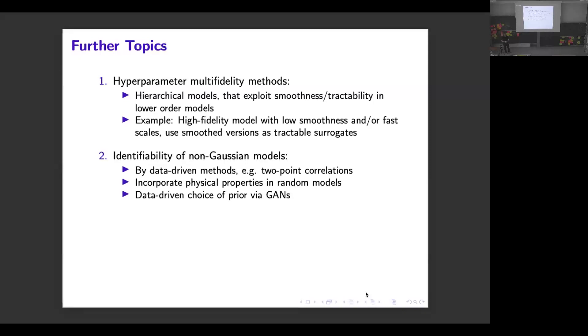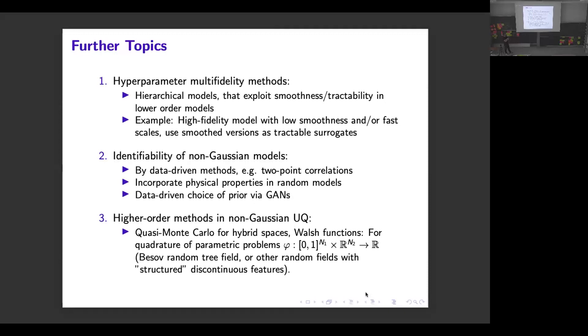Last point was: is there actually a way to use higher-order methods in non-Gaussian UQ? This also relates to my presentation earlier this week where I basically said whenever we have a random field with discontinuous features, I can rewrite it as a parametric mapping with respect to some product space. But in the first factor here, the regularity of this mapping is quite low and higher-order methods wouldn't really work. But it turned out, Peter suggested, that if the structure of the discontinuity is somehow easy or well-behaved, there's actually something you can do.